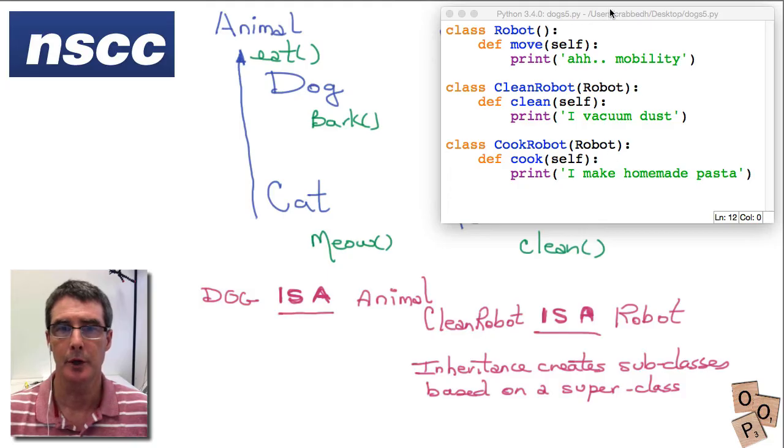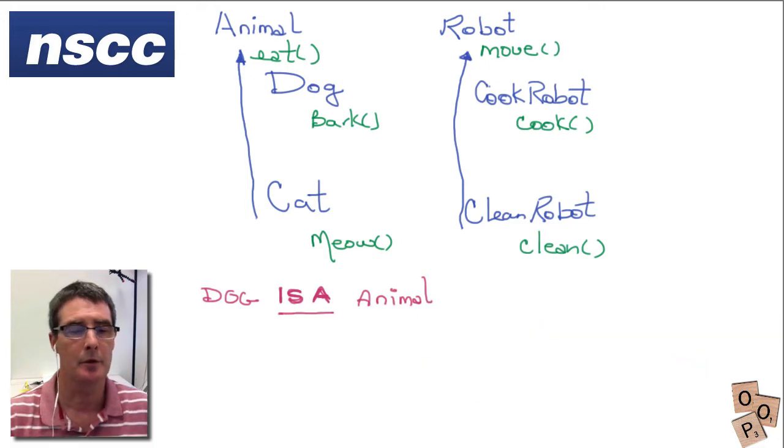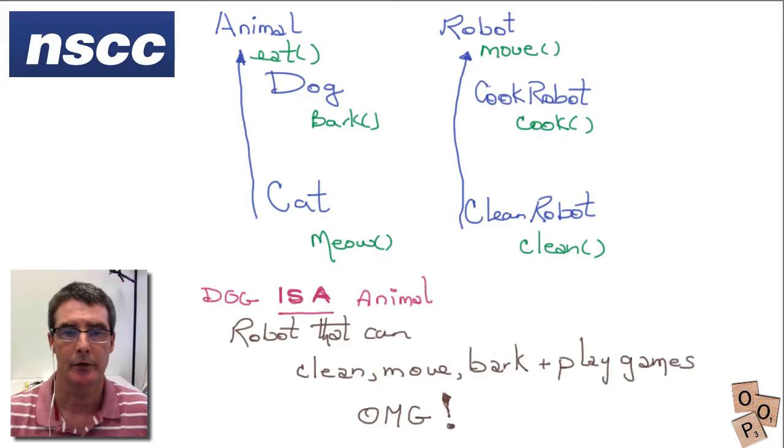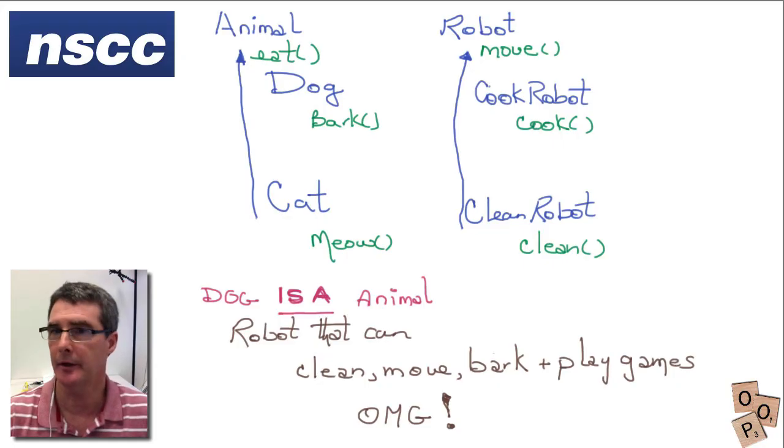And you're feeling pretty good about your object-oriented design paradigm. You've got inheritance working really well and everything is fine. And then your boss comes back a week later and says hey we need a robot that can clean, move, bark and play games. So we're going to create a personal robot. The reason for the barking is to keep away predators when you're not home, play games to keep you entertained. And then we said oh my goodness, how do we do that?